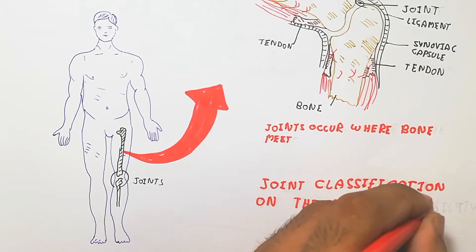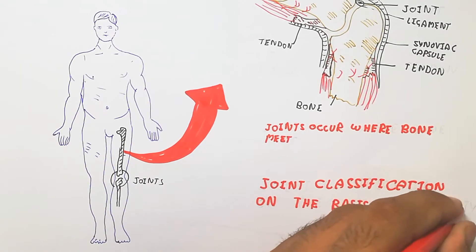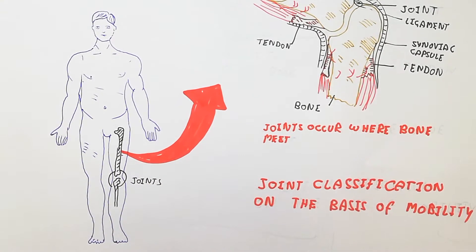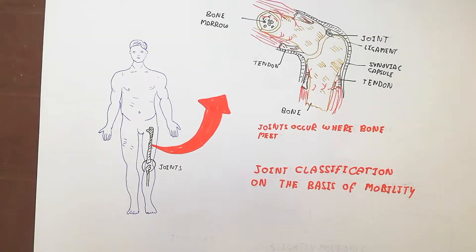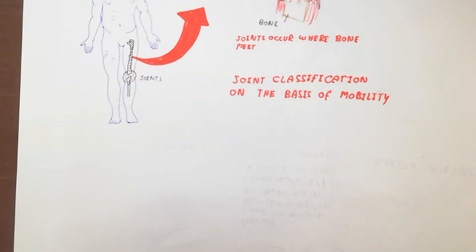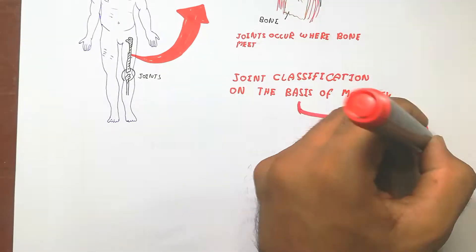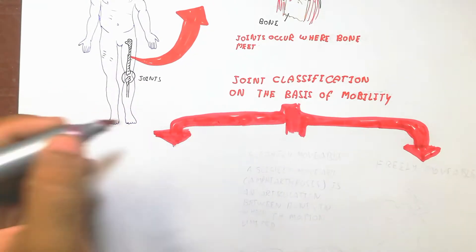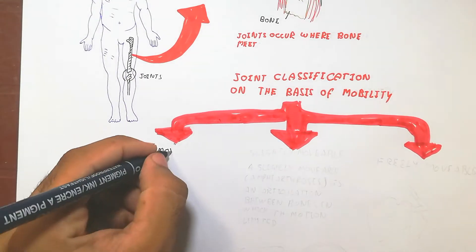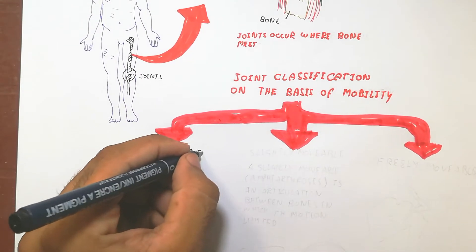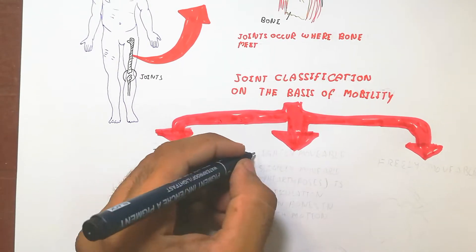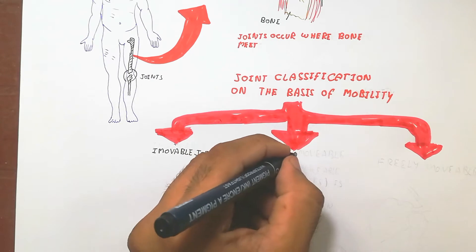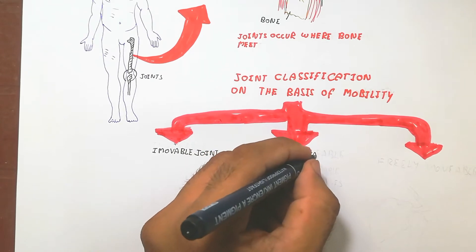Now we will discuss about joint classification on the basis of mobility. Mobility means movement. There are three types: immovable joint, slightly movable joint, and freely movable joint.